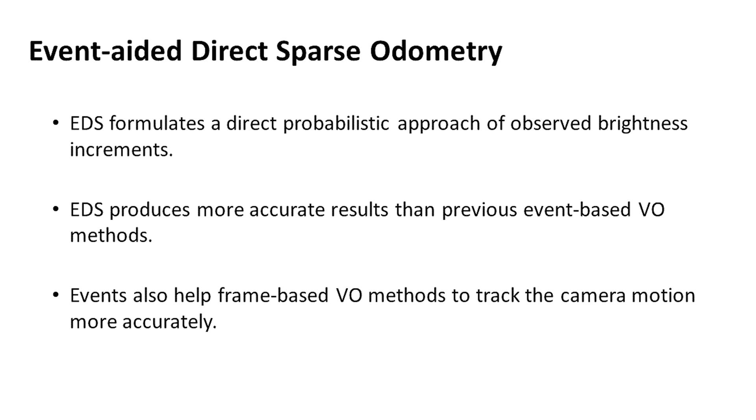EDS formulates a direct probabilistic approach of observed brightness increments. The results are more accurate than previous event-based methods. Events also help frame-based direct methods to track camera motion more accurately. The event generation model computes the brightness change of sparse points to estimate camera motion, calculating changing brightness using sparse pixels where connectivity among points is not required.